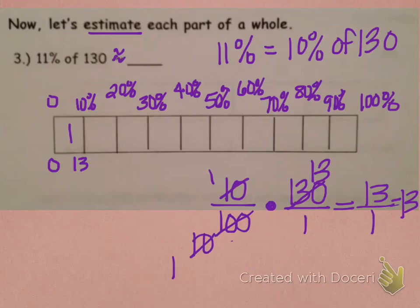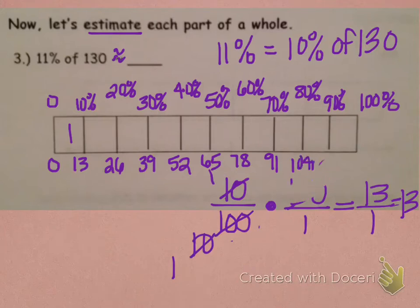So, then we do multiples of 13. 13 times 2 is 26. 13 times 3 is 39. 13 times 4 is 52. 13 times 5 is 65. 13 times 6 is 78. 13 times 7 is 91. 13 times 8 is 104. 13 times 9 is 117. And then, of course, 13 times 10 is 130.